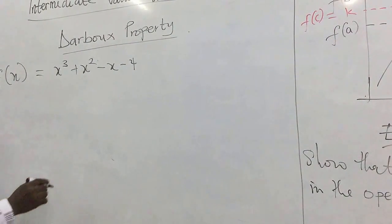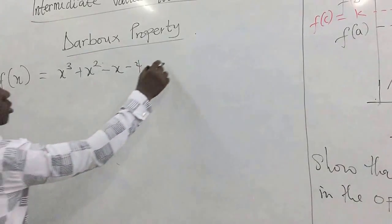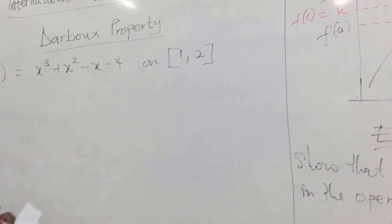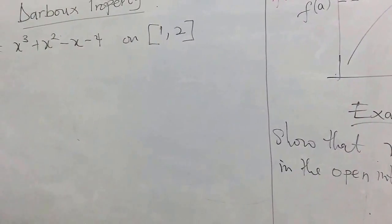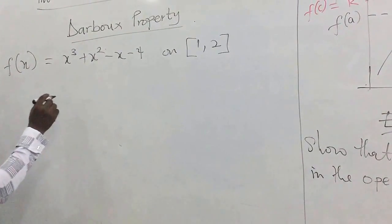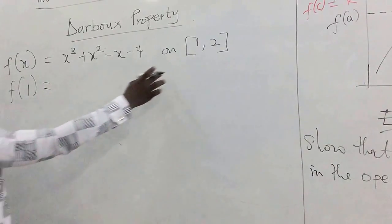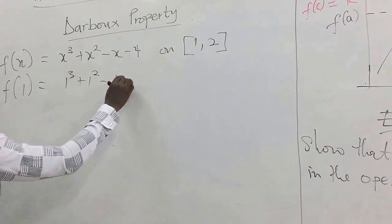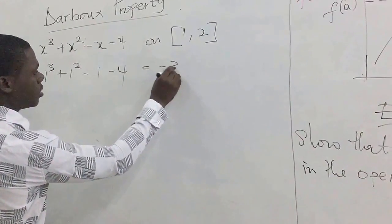Let's take that open interval and make it a closed one: [1, 2]. When stating the property, we state that the function must be continuous on the closed interval, so we subject the question to the property. So f(a) becomes f(1): 1³ + 1² - 1 - 4, which gives us negative one.